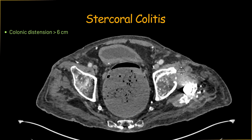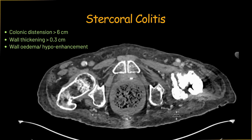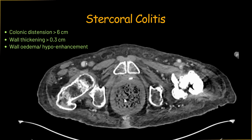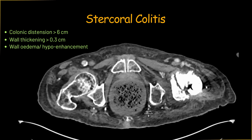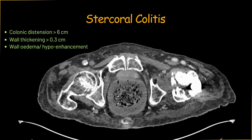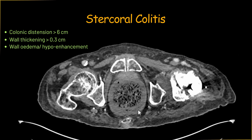The second thing we need to look at is the wall of the involved colonic segment. As I go down into the rectum, do you see some thickening in the colonic wall? Measuring it here — it's about 0.9 centimeters. This is another difference between simple fecal impaction and stercoral colitis: in stercoral colitis, the colonic wall thickening is more than 3mm. So now we have two red flags: a distended rectum and rectal wall thickening greater than 3mm.